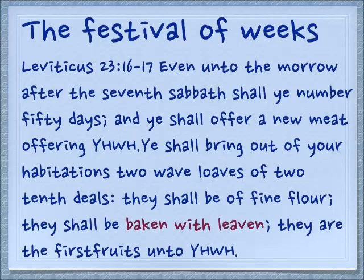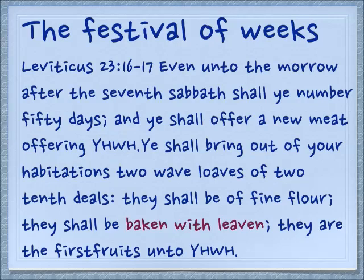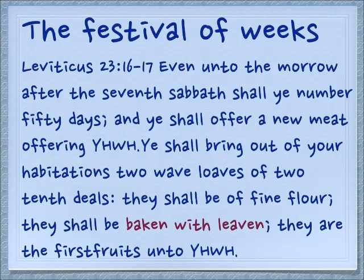It's interesting that we find in Leviticus the gleaning law is repeated directly after the commandments about the festival of weeks — the festival which is the beginning of the wheat harvest. Leviticus 23:16: 'Even unto the morrow after the seventh Sabbath you shall number 50 days, and you shall offer a new grain offering to Yahweh. You shall bring out of your habitations two wave loaves of two-tenths of an ephah and they shall be of fine flour. They shall be baked with leaven, and they are the first fruits — Bikurim — unto Yahweh.' The interesting thing about this festival is that the bread is baked with leaven, which is unheard of in any other offering, and so it points to something very specific.